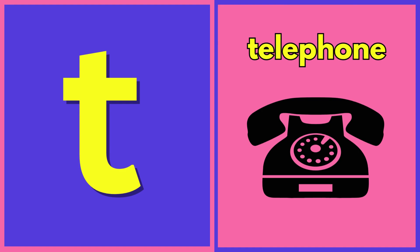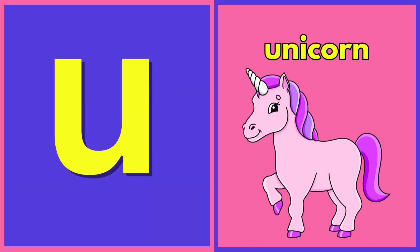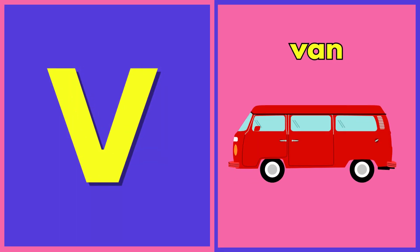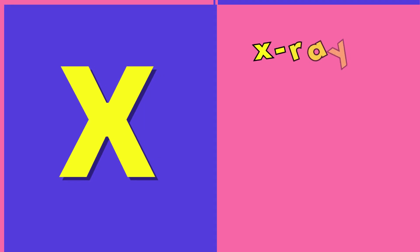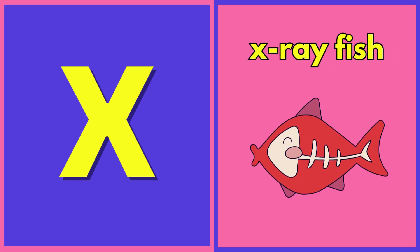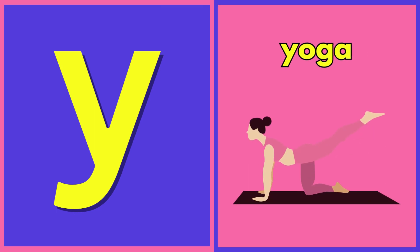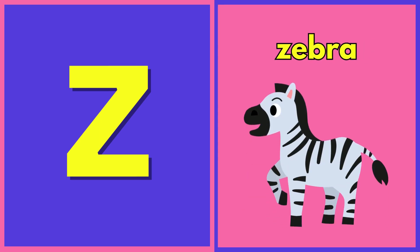U for unicorn, V for van, W for window, X for x-ray fish, Y for yoga, Z for zebra, Blah!